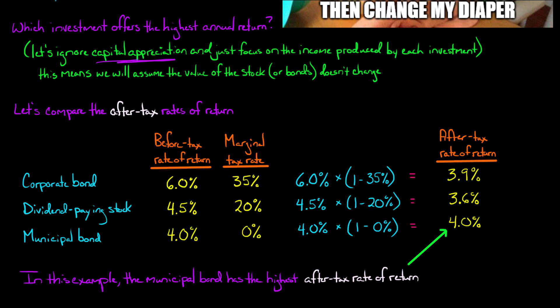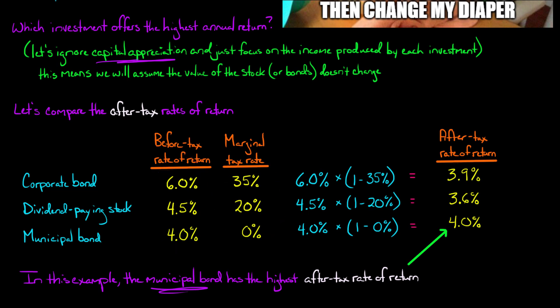In this particular example, the municipal bond has the highest after-tax rate of return. Given these hypothetical before-tax rates of return and these hypothetical tax rates, the municipal bond would be the best investment in terms of offering the highest rate of return, ignoring capital appreciation.